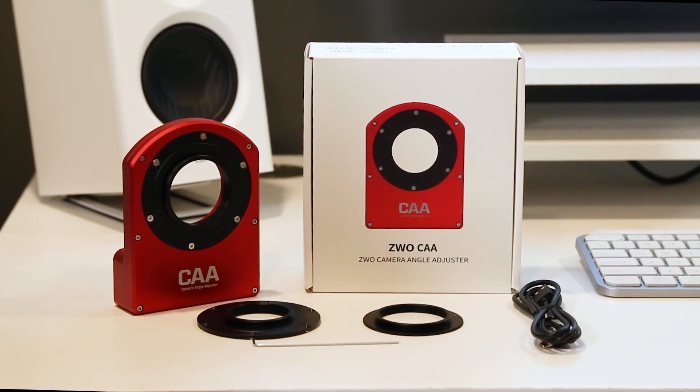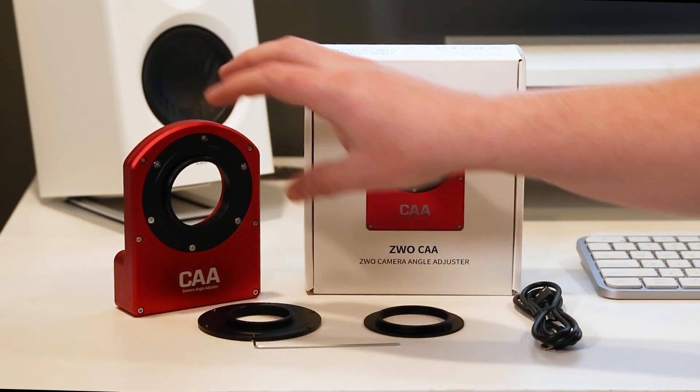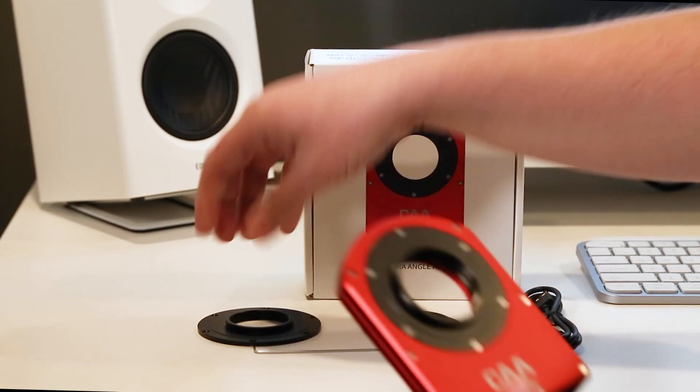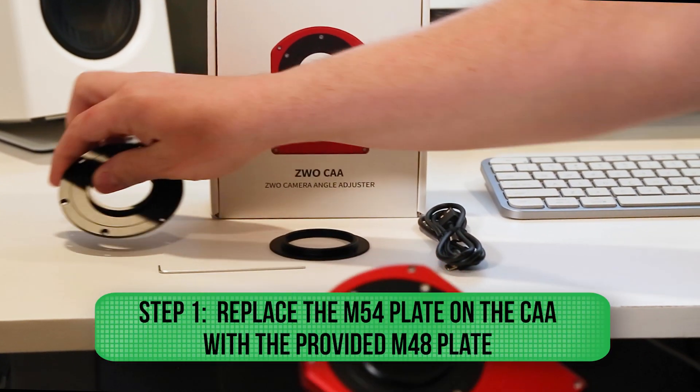I'm using an ASI 533, which has a small sensor, so using the M48 adapter will be more than sufficient. Okay, so first things first, let's remove the M54 plate on the CAA and replace it with the provided M48 plate.